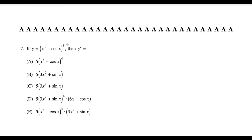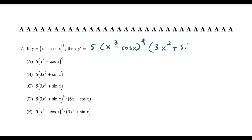Question seven uses the chain rule. Derivative of the outside, keep the inside (x³ − cos x), then multiply by the derivative of the inside, which is 3x² + sin x (since minus·minus = plus). This matches choice E.